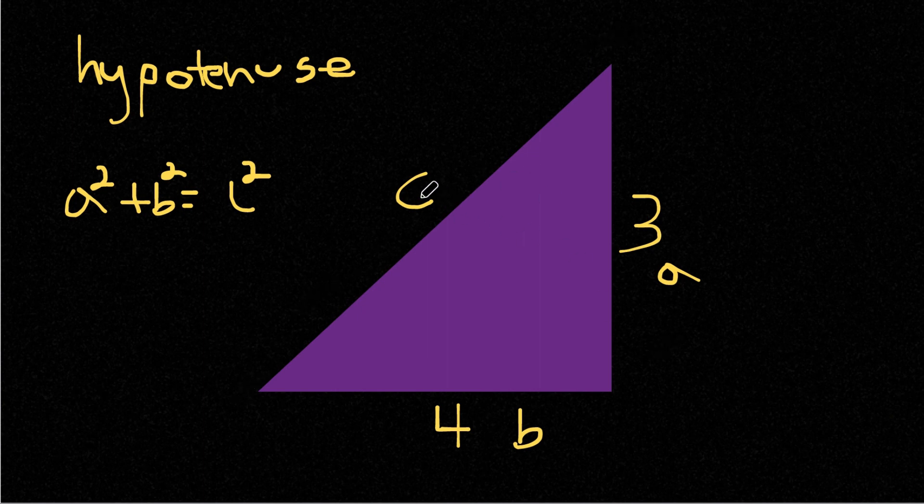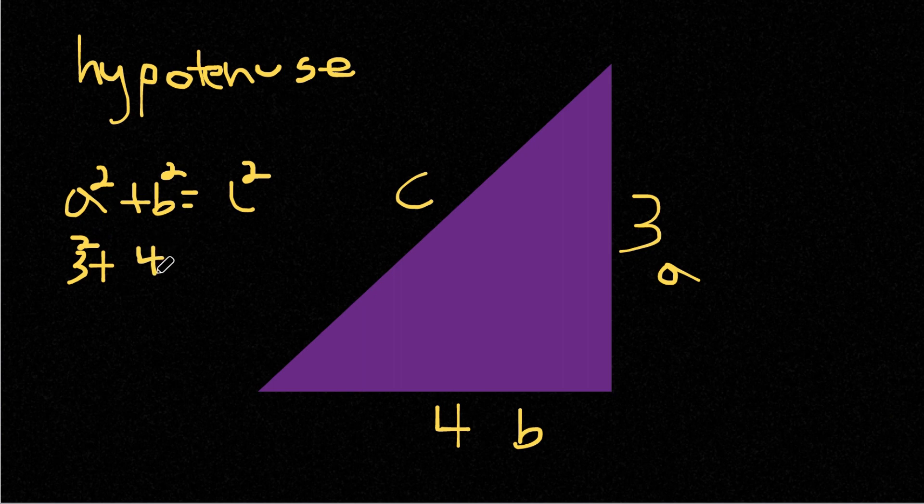To find our hypotenuse here, we can simply plug these two values in to our formula. We're going to plug in A and B. So 3 squared, 3 is A, plus 4 squared equals c squared.